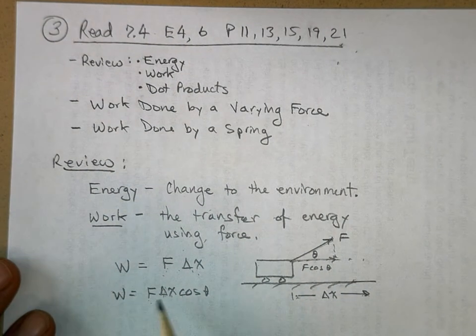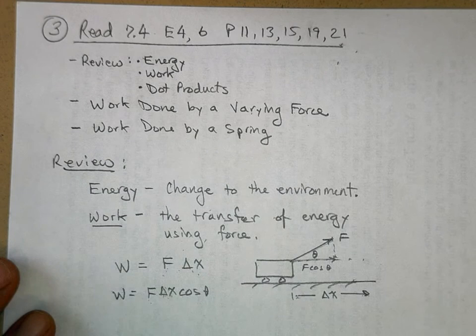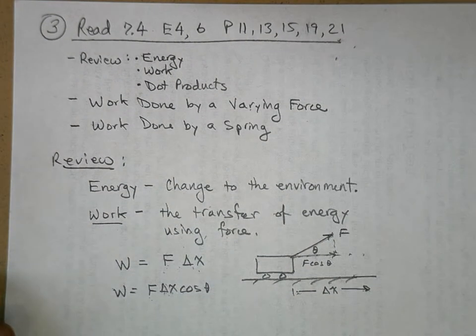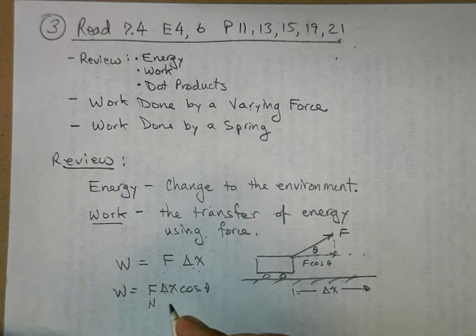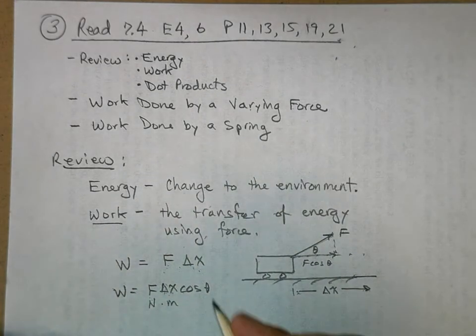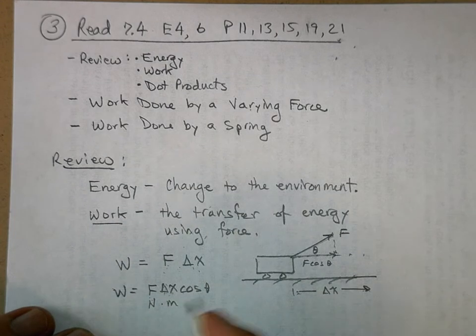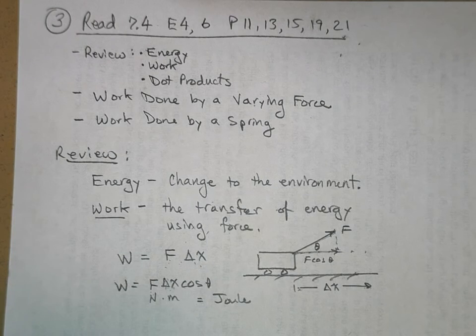So the force times the displacement times the cosine of the angle between the force and the displacement gives us how much work was done. And, of course, we said this was in newtons. This is in meters. Cosine theta is dimensionless. And so a newton times a meter we call a joule.